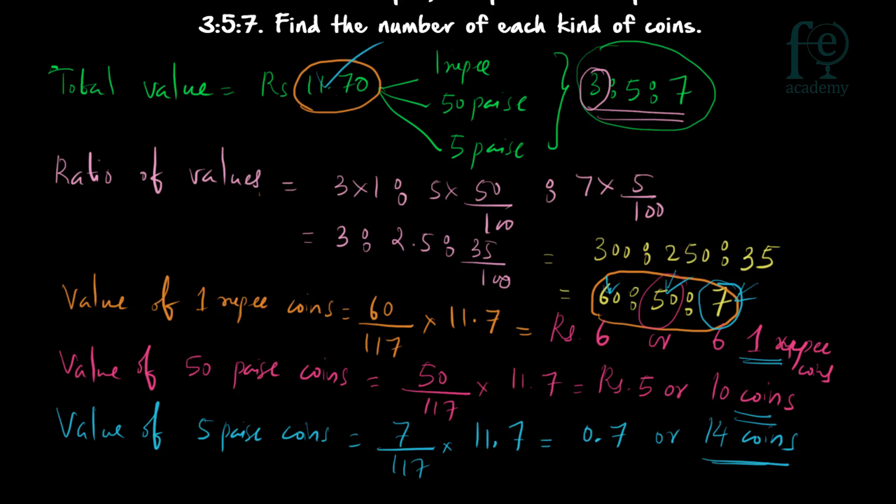To summarize: in Question 1, the ratio of values and the total number of coins were given, while in Question 2, the total value and the ratio of the number of coins were given. Approach each accordingly to find the number of coins of each kind. Thank you for watching.